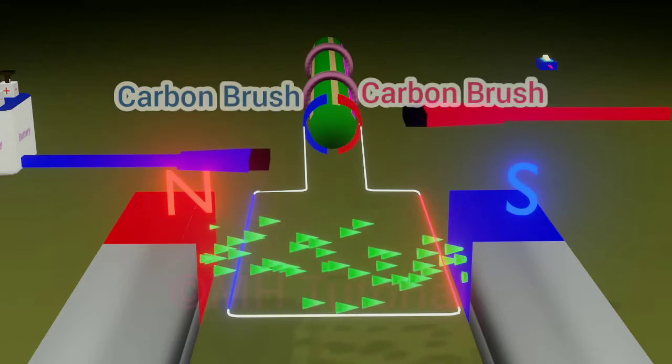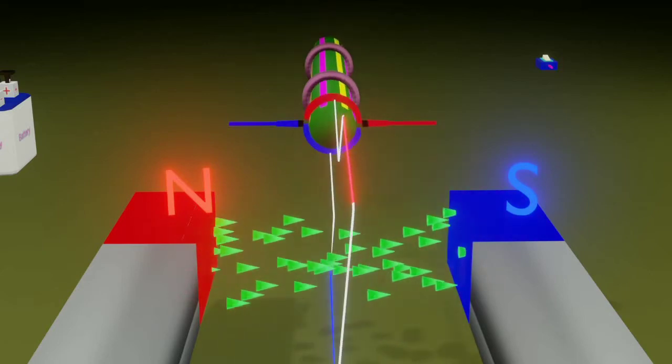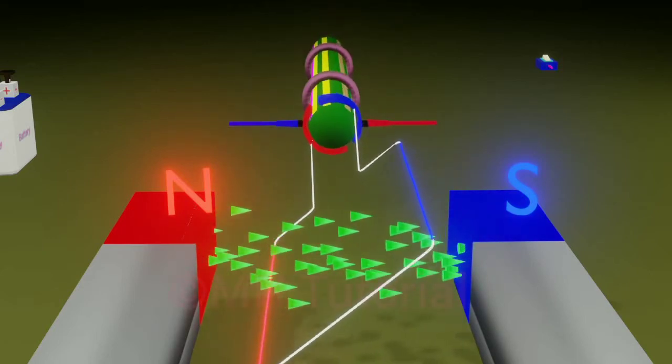Two gas carbon brushes are placed next to the commutator. Brushes are placed in such a way that when one brush touches a commutator, the other brush will touch the other commutator.